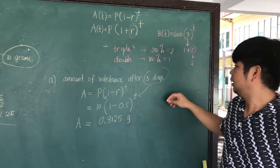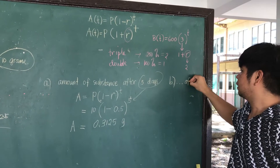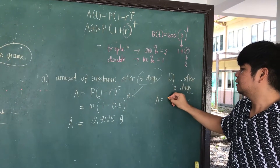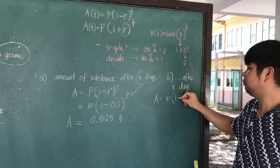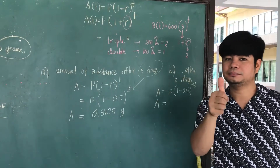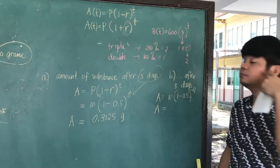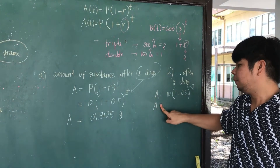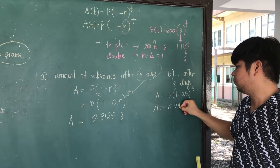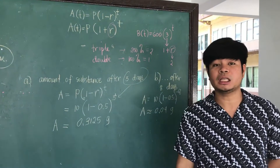What about the amount of substance after 8 days? A equals 10 times (1 minus 0.5) raised to 8. The amount is approximately 0.04 grams. So it keeps decreasing until the amount reaches zero.